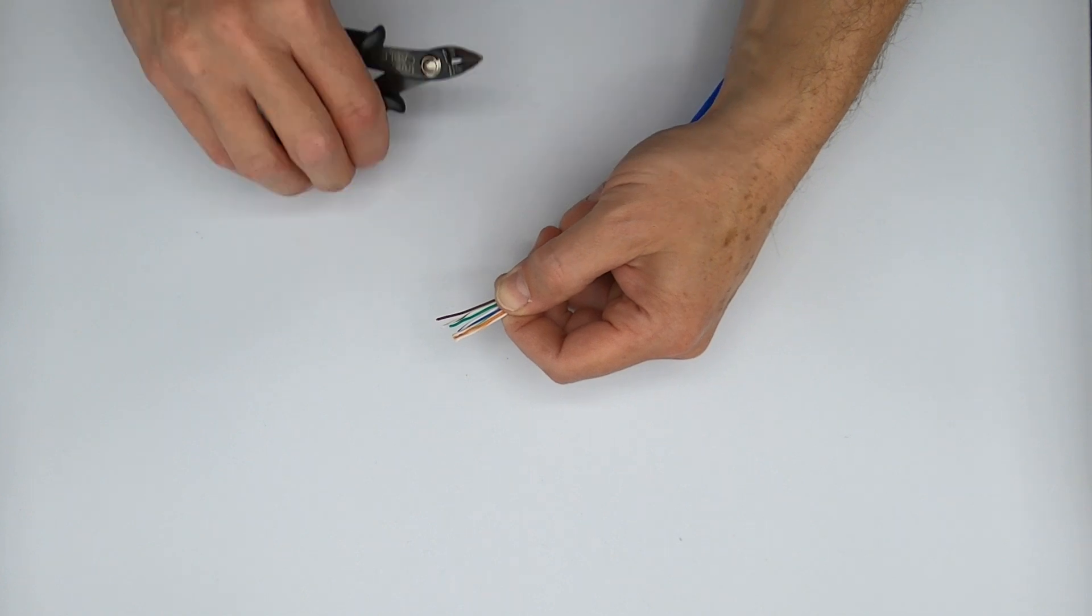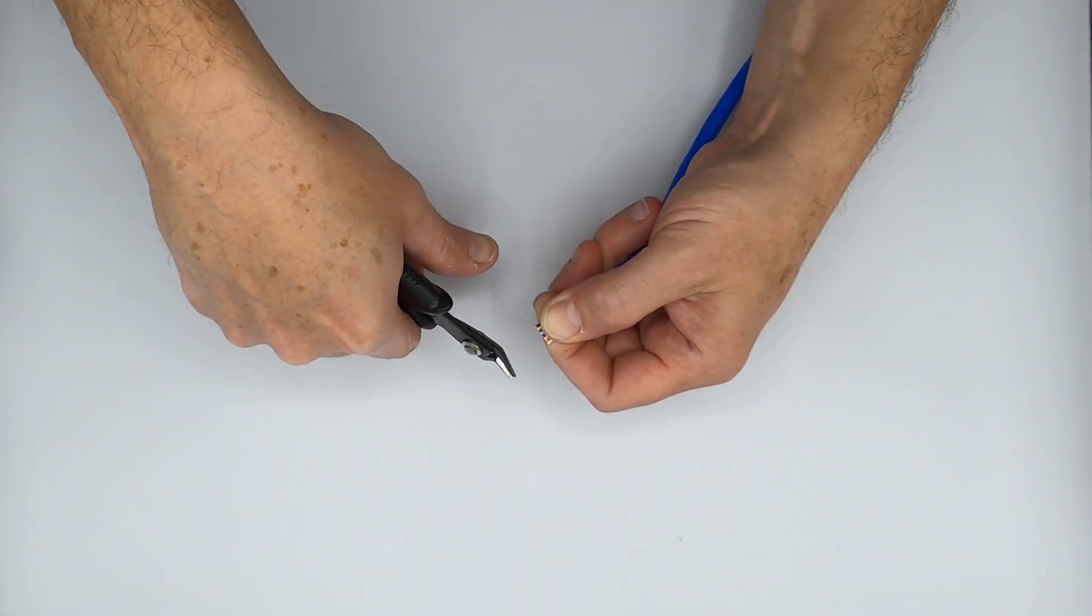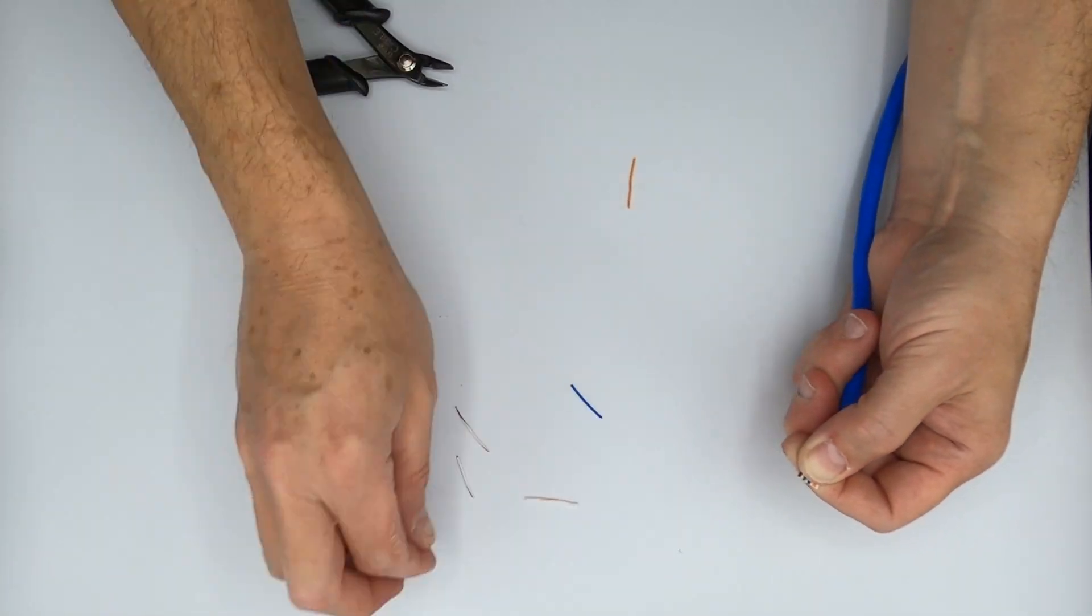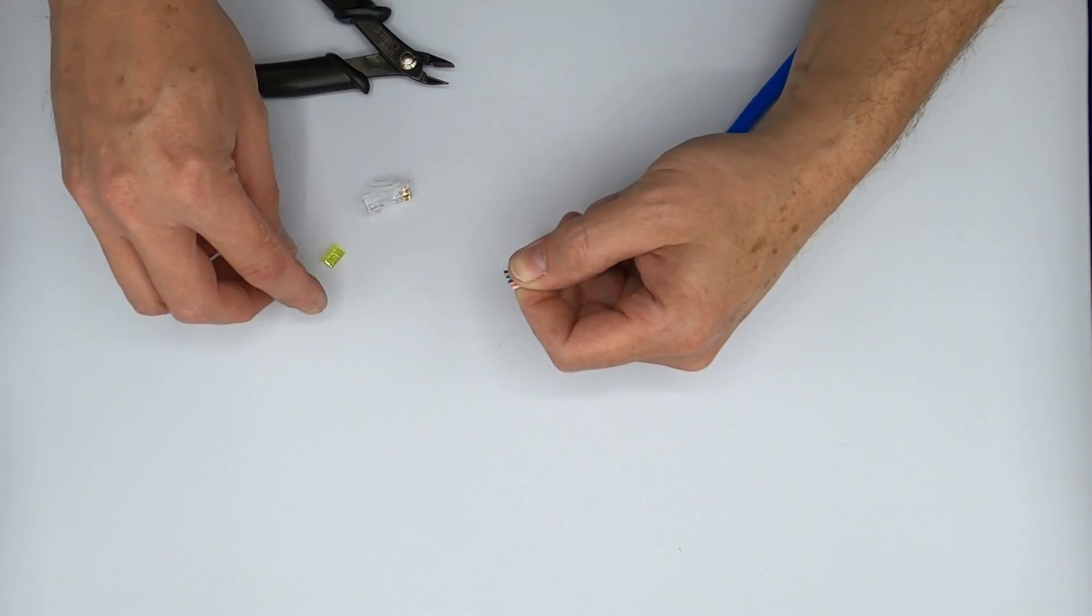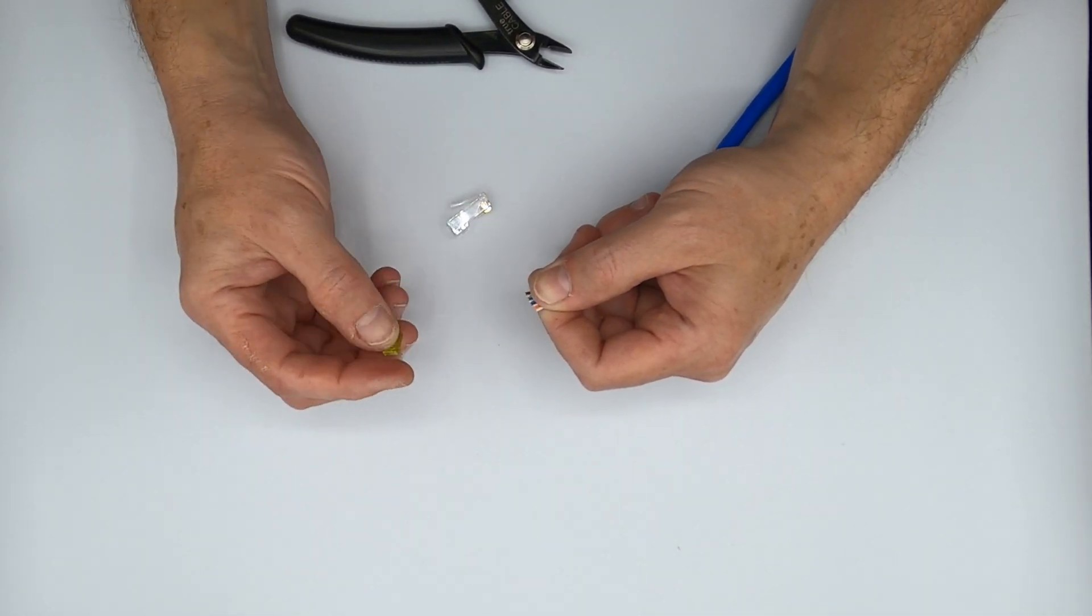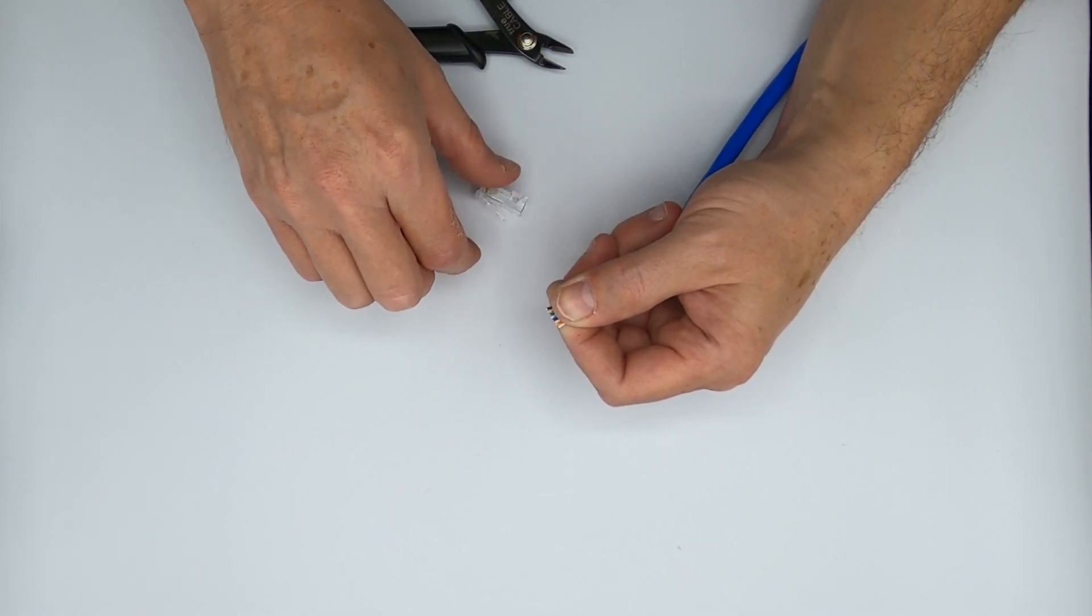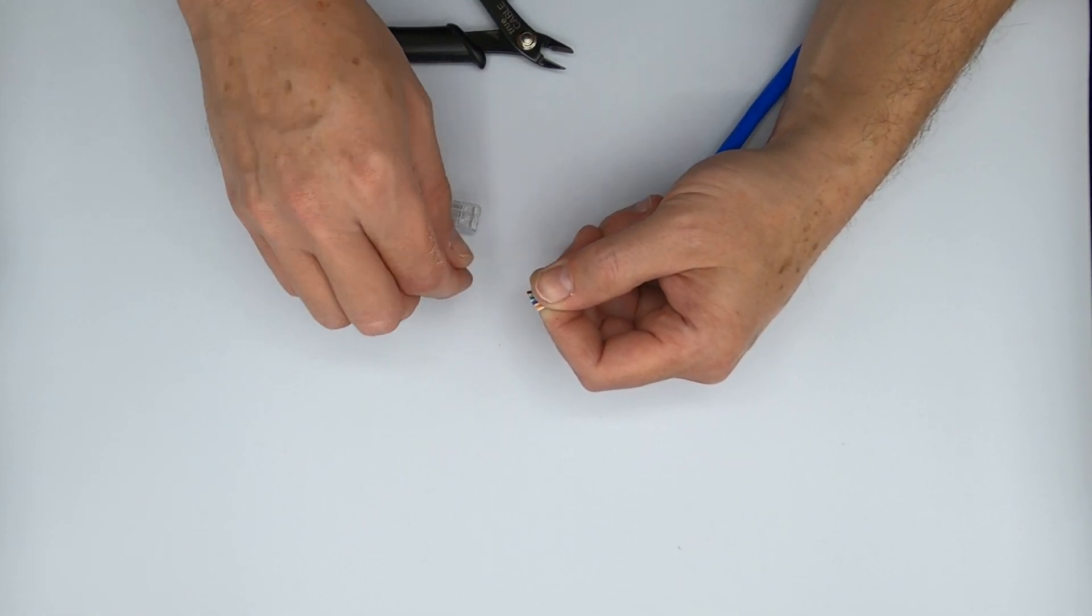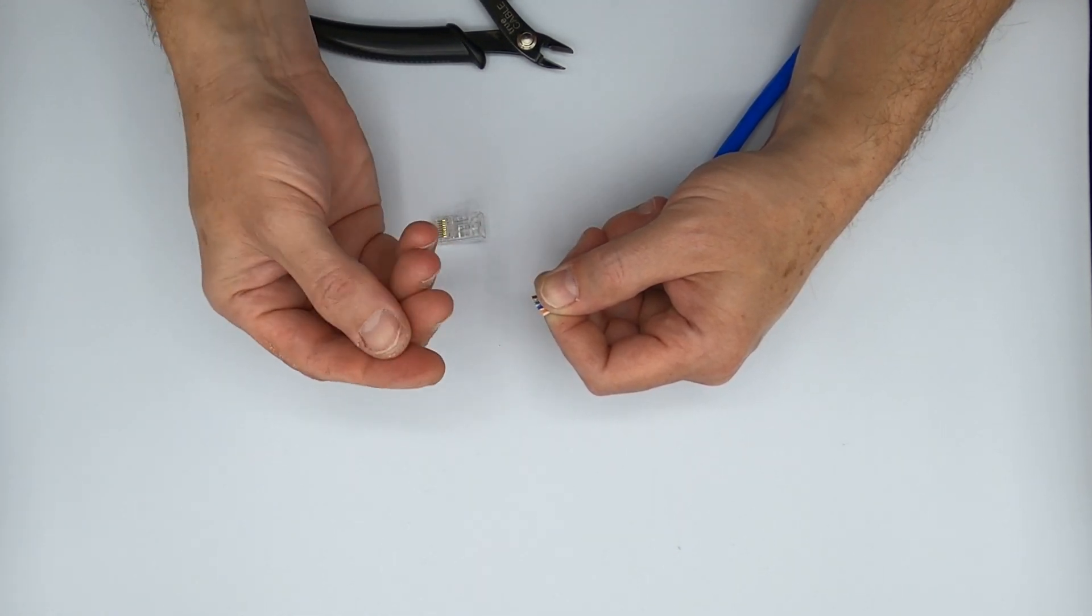The next step is flush cutting. And we flush cut to make it easier to put the load bar under the cable in this case. Now one thing to be aware of, this load bar is position sensitive, which is to mean it only goes into the plug one way.